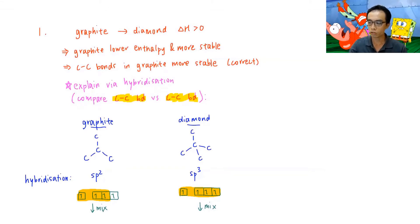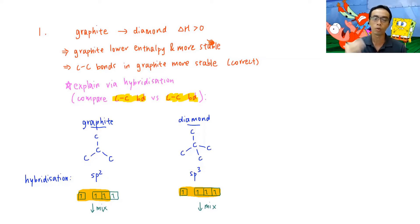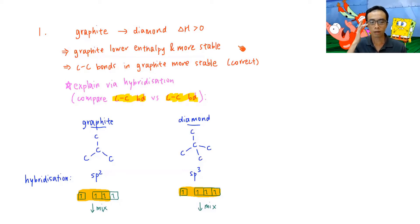Option 1: the bond energy of the carbon-carbon bond in graphite is greater than that in diamond. Since graphite to diamond is endothermic, graphite has a lower enthalpy and is more stable. If graphite is more stable, the bonds in graphite must be more stable than those in diamond — which is interesting, because both graphite and diamond have carbon-carbon single bonds.